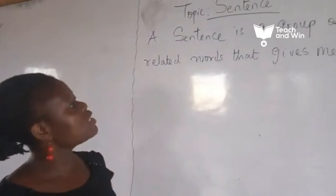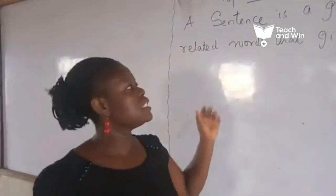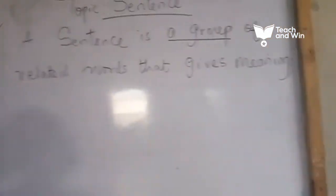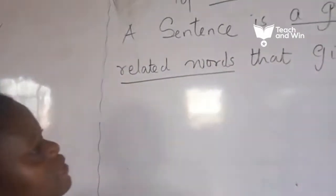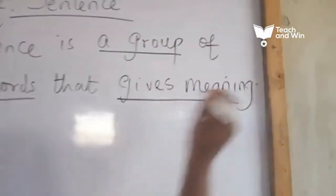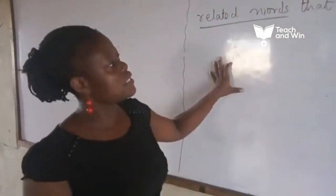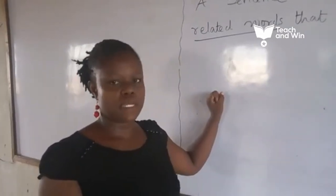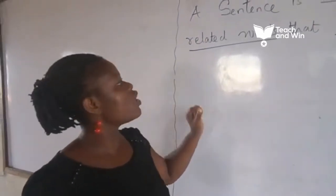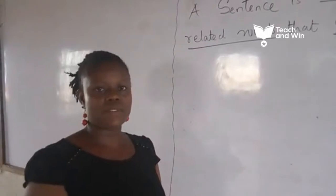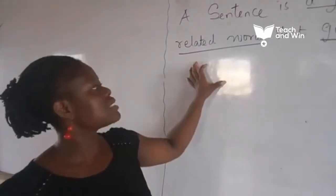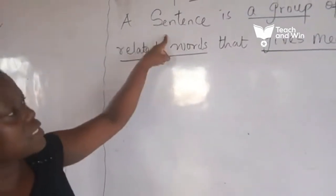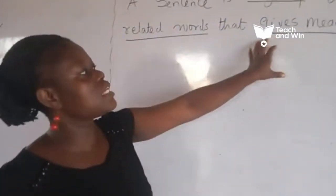Now, what are the pointers we need to take cognizance of in this definition? We need to consider a group, we need to consider related words, and we need to consider gives meaning. For you to have a sentence, you have got to have strings of words. These strings of words must be related — if they are unrelated, you cannot have a sentence. And lastly, it must give meaning.